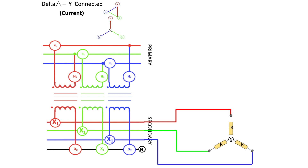I'm going to designate the current flowing in the secondary red phase as I with the subscript r-sec, or secondary. That is the same current — because of the Y connection on the secondary — as the current flowing in the secondary red phase winding of the transformer. And because it's magnetically linked with the primary side, it is in phase with the current flowing in the primary winding.